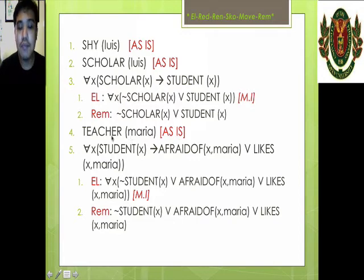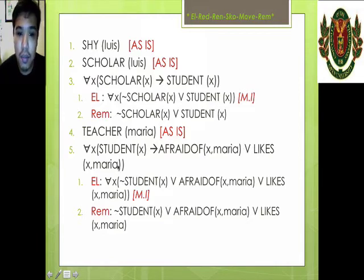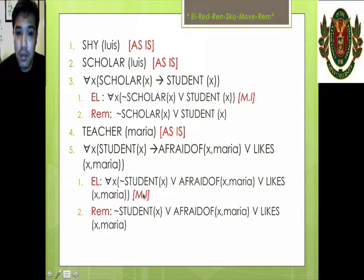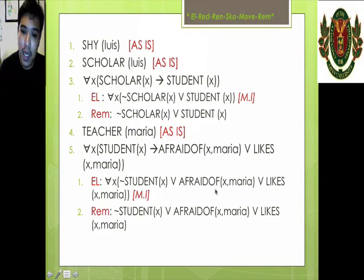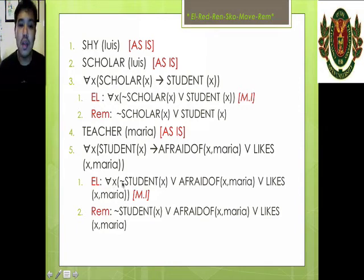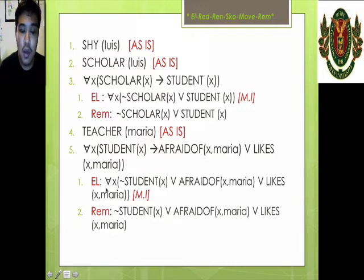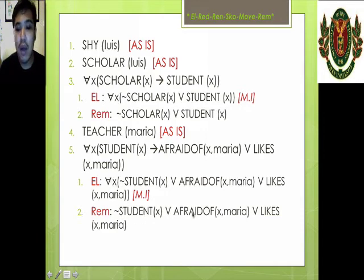Next, Maria is a teacher — we retain it. For: for all X, if X is a student then X is afraid of Maria or X likes Maria — we have a material implication, so we use EL. Now it will be: for all X, X is not a student or X is afraid of Maria or X likes Maria. Nothing to reduce in terms of scope. Nothing to rename. Nothing to Skolemize. Nothing to move out. So the last step is to remove the universal quantifier, and we now have the clausal form for this statement.